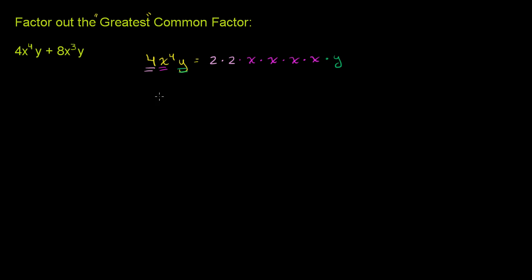Now let's do the same thing for 8x to the third y. The prime factorization of 8 is 2 times 2 times 2. The expansion of x to the third is x times x times x — x multiplied by itself three times. And then we are multiplying everything by y.